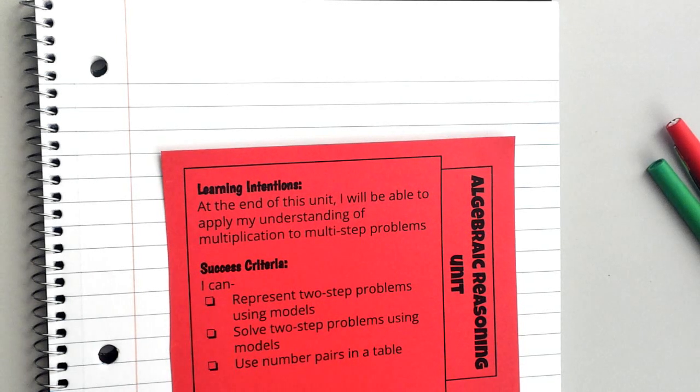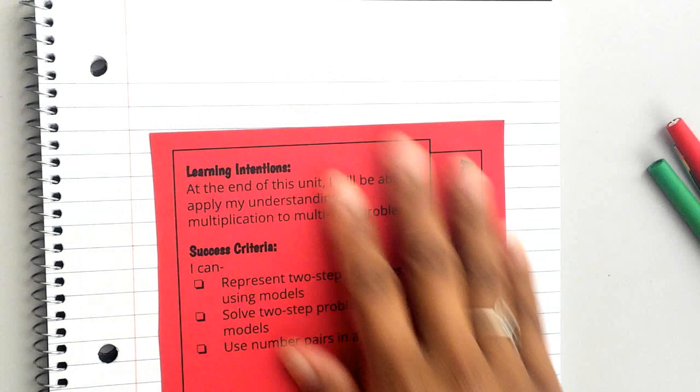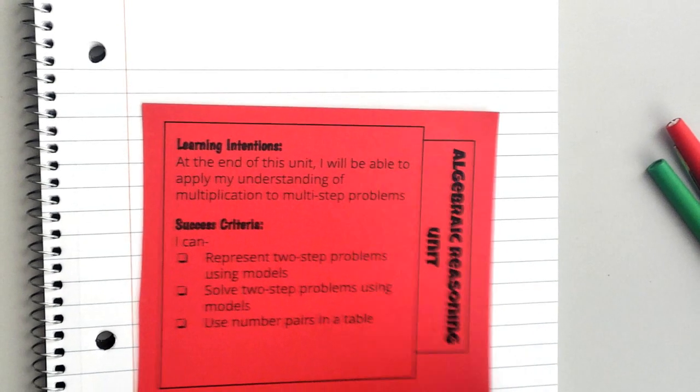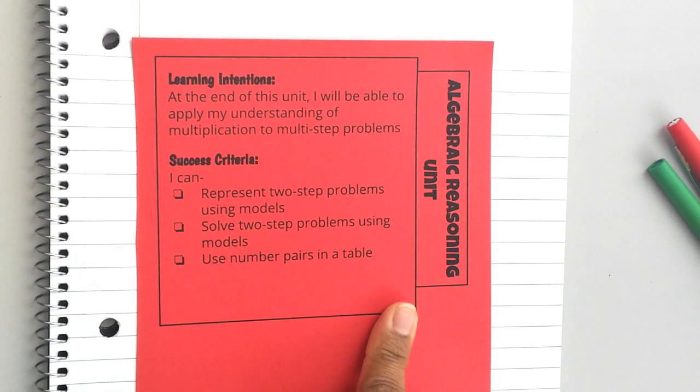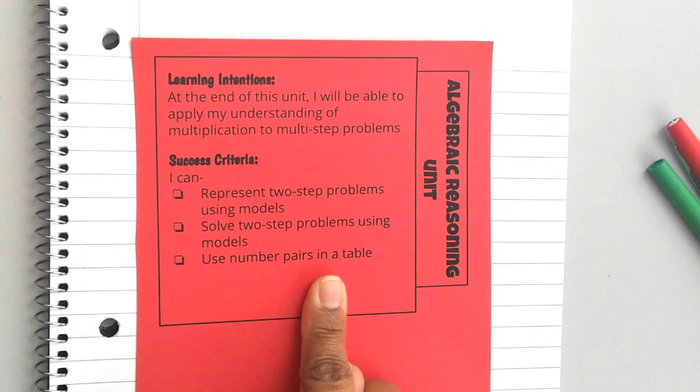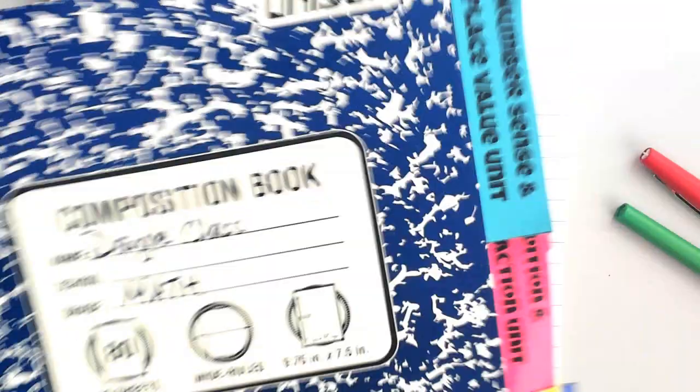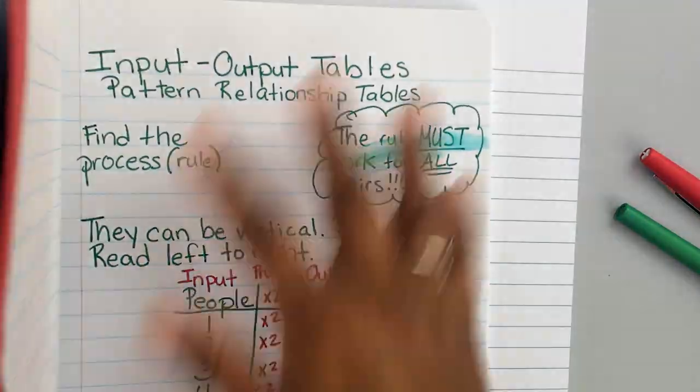For those of you who are absent, we have a new tab that we need, so before you get started make sure to ask me for this new tab. We're going into algebraic reasoning using number pairs, and you're going to cut that out and put it in your notebook. Your next page will be what we talked about for your number pairs, so just make sure you ask me for that.